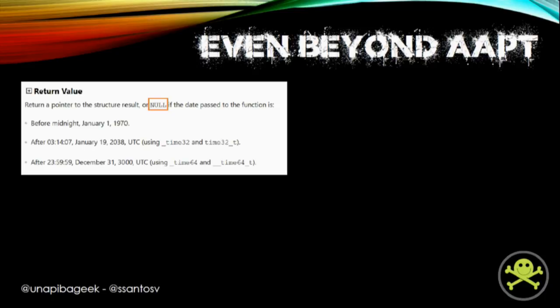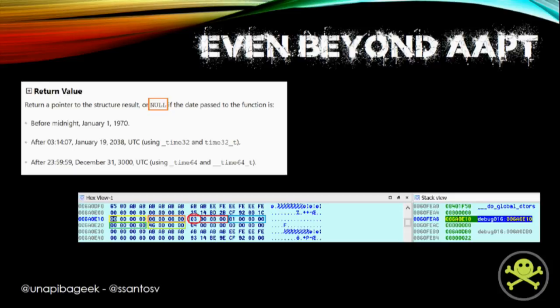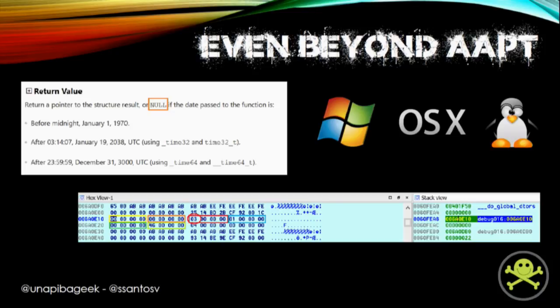A good question is: should localtime() return this? In several documentation sources, we can see that localtime() should return null in this case instead of this information disclosure, because zero is not a valid argument. However, we can see in the IDE screenshot the return of this function to confirm that localtime() is not handling errors correctly — there in red we can see the GMT offset of three, which was GMT plus three. This bug is present on Windows, Linux, and OS X, so Android developers using AAPT will be leaking their timezone regardless of the platform they're building on.